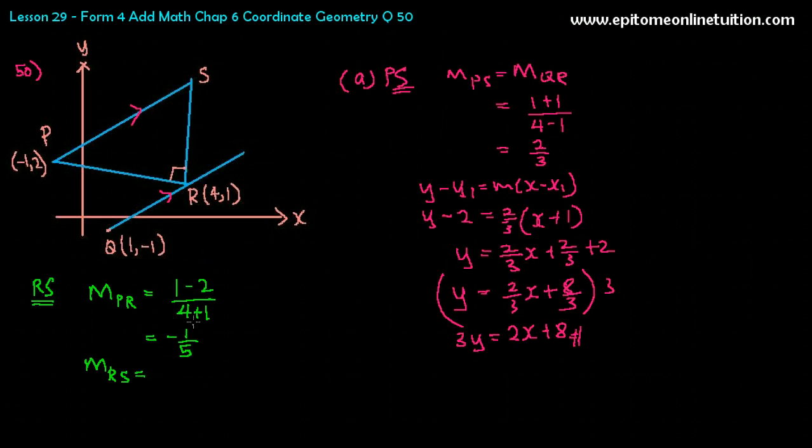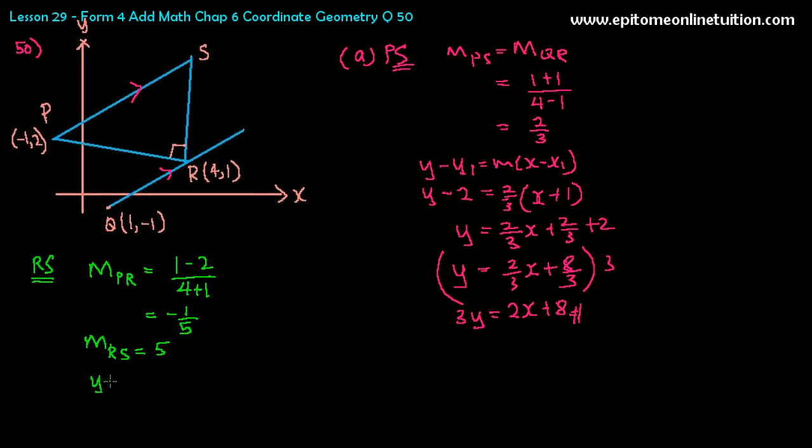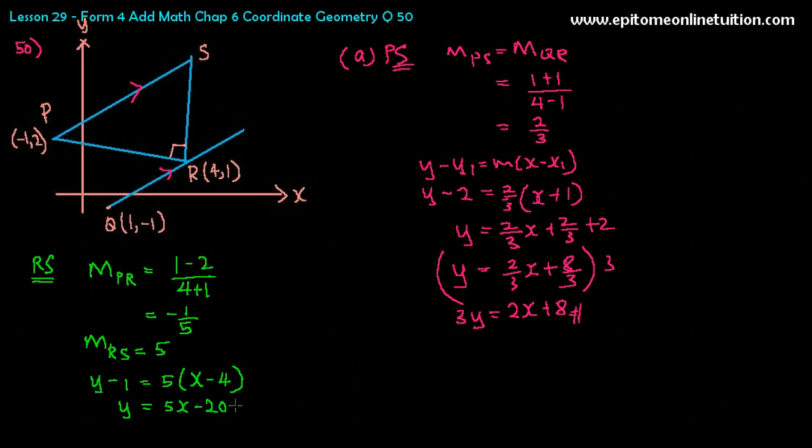So M of RS would be the inverse of this. So when you inverse, the shortcut is just inverse the number and also inverse the sign. So 1 over 5 inverted becomes 5 and negative inverted becomes positive. So the gradient is positive 5. Now you may substitute Y minus Y1. Let's just directly put it in. Y minus Y1. So we're looking for RS, remember? So the point is R. The point is R. So Y minus 1 is equals to the gradient is 5 and X minus 4. So that's Y equals to 5X minus 20 plus 1. So that is Y equals to 5X minus 19. And that is the equation for the line RS.